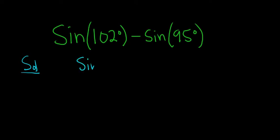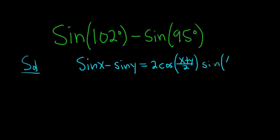Sine x minus sine y is equal to 2 cosine of x plus y all over 2, then we have sine of x minus y all over 2.